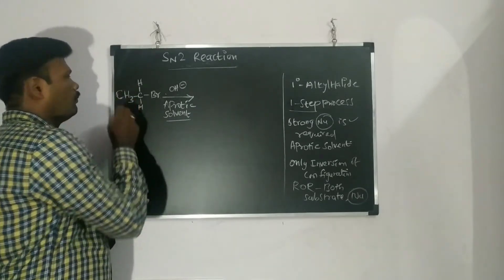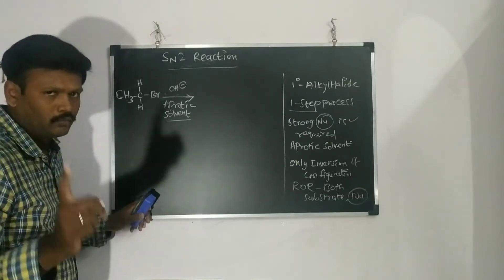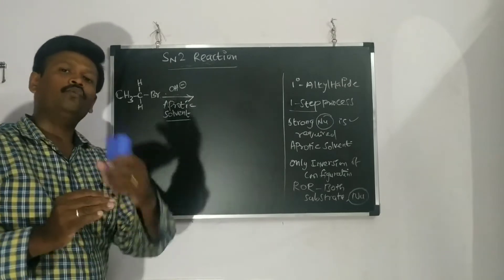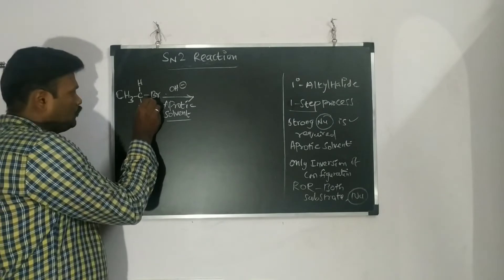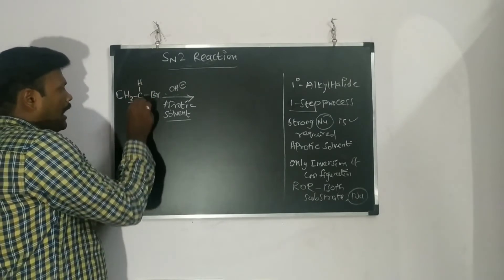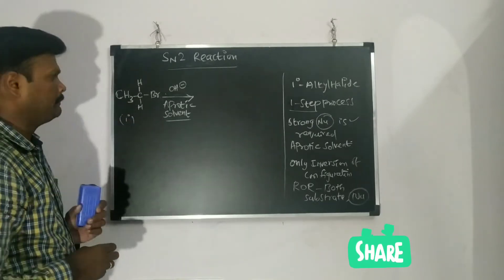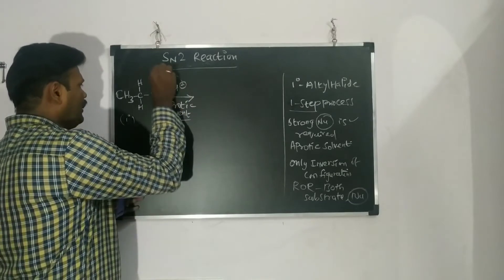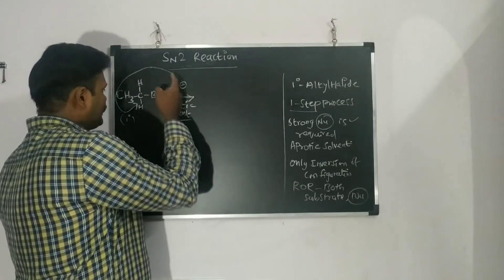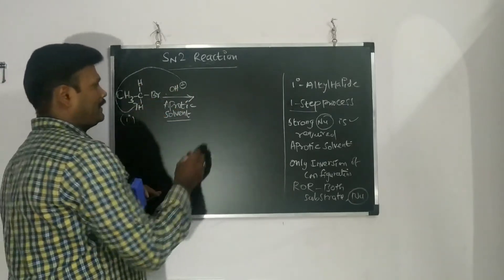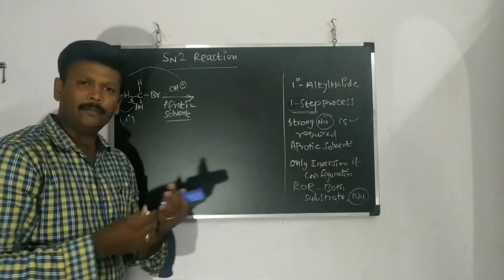Now let's work through an example. We have taken a 1° alkyl halide. The degree is determined by how many carbons are attached to the carbon bearing the halide — here there are two hydrogens and one carbon, confirming it is a 1° alkyl halide. The nucleophile (OH⁻) will come and attack only from the back side, because attacking from the front would cause repulsion. There are no intermediates and no carbocation formed — it is a one-step process.